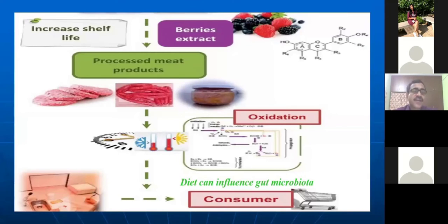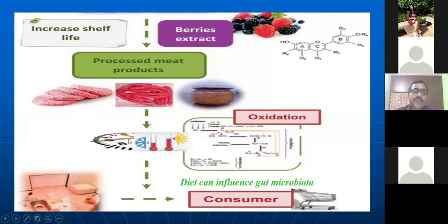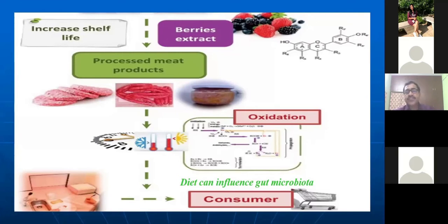Here we can see what I was telling about increasing shelf life — using plant products, either extracts or different methods of application, to increase shelf life in processed meat products. This prevents microbial growth and spoilage, and can prevent the oxidation process. It can then reach the human body and play a role as an antioxidant. In addition, diet has a tremendous influence on the gut microbiota, which is a very new and active area of research that I will highlight more later.